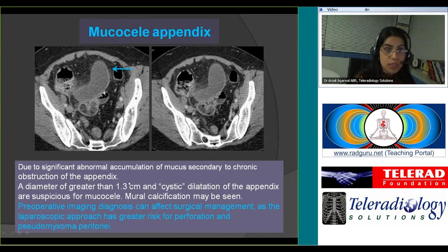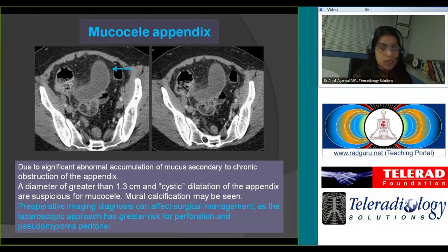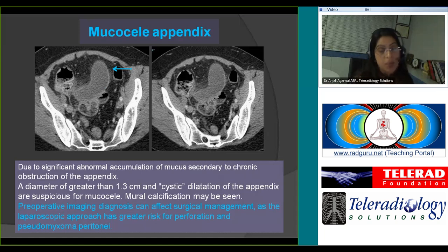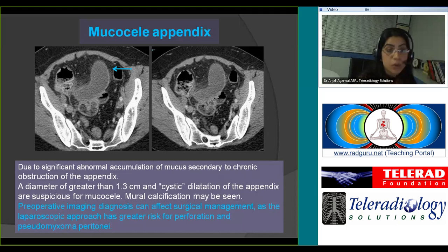Mucocele of the appendix can be diagnosed when you see an appendix greater than 1.3 centimeters demonstrating cystic dilatation. You may or may not see mural calcification. It is usually due to significant accumulation of mucus in a chronically obstructed appendix. Preoperative imaging diagnosis is important as it affects surgical management — an open surgical approach is preferred, as the laparoscopic approach has a greater risk of perforation and can result in pseudomyxoma peritonei if not adequately resected.